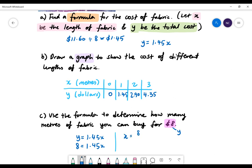X will equal 8 divided by 1.45. Therefore, X equals 5.52 metres.